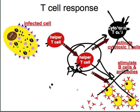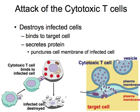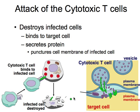Once the cytotoxic T-cells are alerted, they destroy the infected cells. They bind to the infected cell, release different proteins, bind to the plasma membrane, and cause the plasma membrane to start breaking apart. That process is called apoptosis — the cell breaks apart and we recycle all of the different parts of that cell.